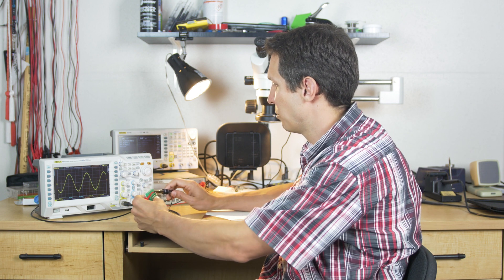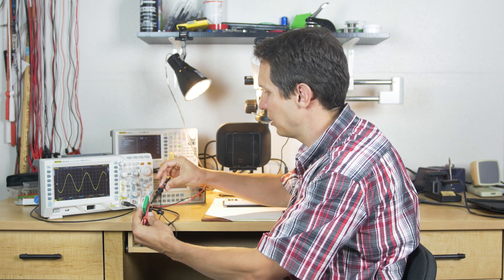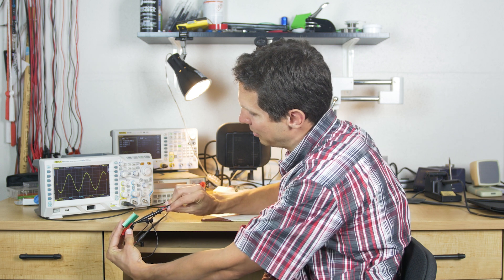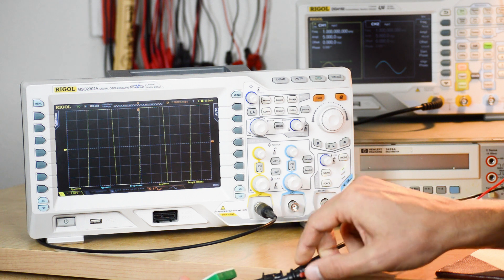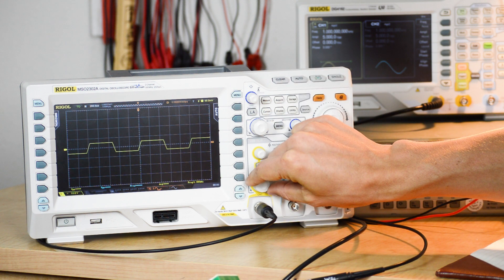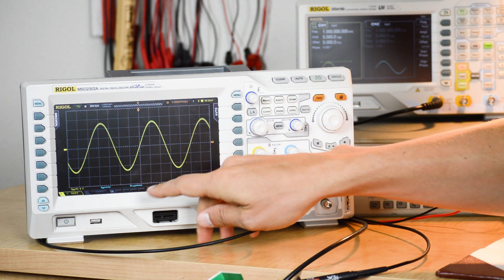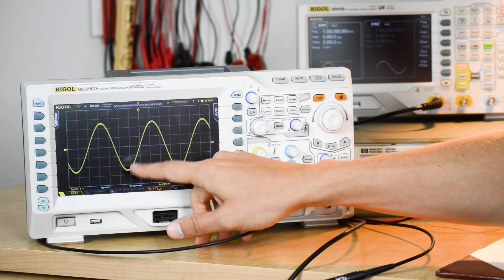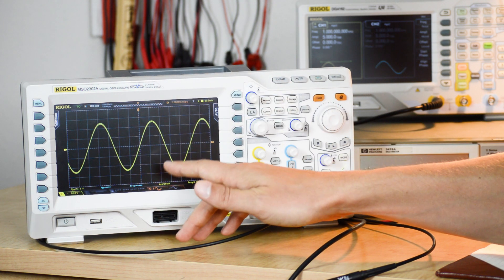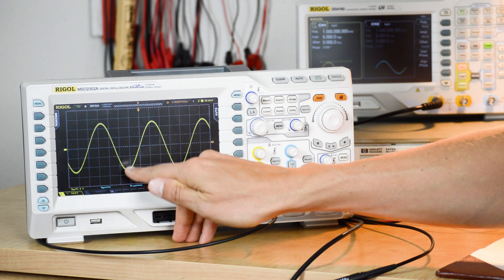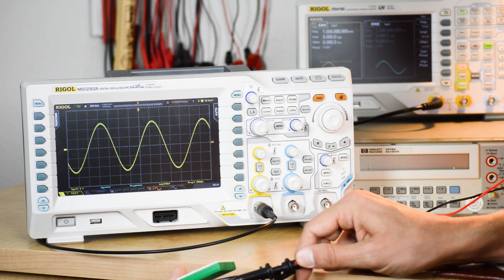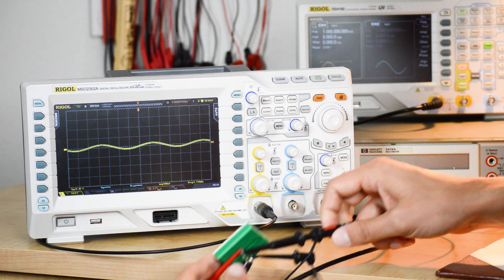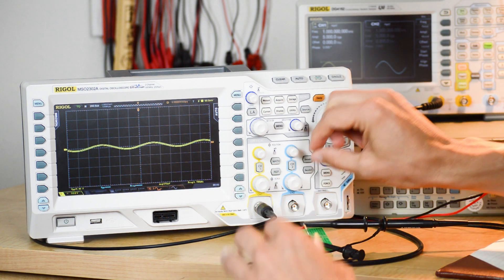One common mistake is the probe setting. On this probe there's a slider—X10 and X1. If I slide it to X1, it suddenly gets very different. It thinks my signal is 50 volts peak to peak and 10 volts per box. You need to be careful that you have the right probe on the right setting, or you're going to be really confused about what you're getting.